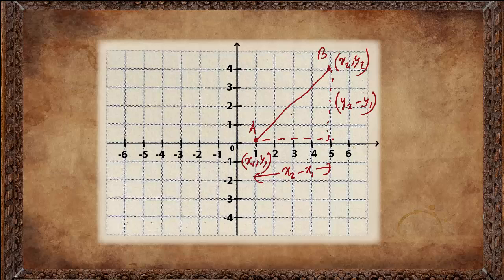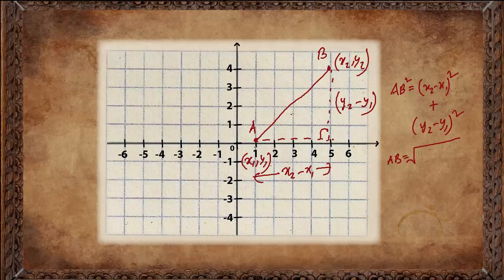By the Pythagorean theorem, AB squared equals the base squared plus the height squared: (x2 minus x1) squared plus (y2 minus y1) squared. Taking the square root of both sides gives AB equals the square root of the difference of x whole squared plus the difference of y whole squared. That gives us the length of the line.